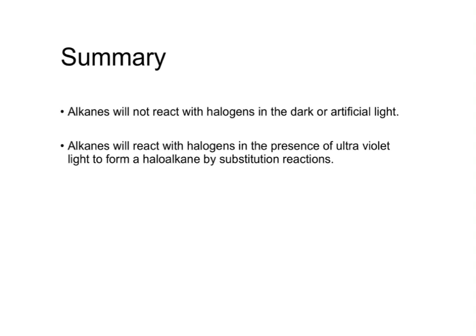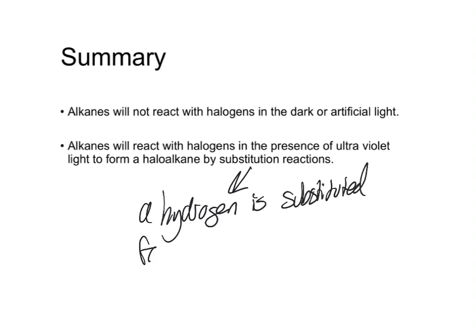The alkanes will react with halogens in the presence of bright sunlight or ultraviolet light by substitution reactions. And substitution, remember, means that one of the hydrogens is substituted for a halogen atom.